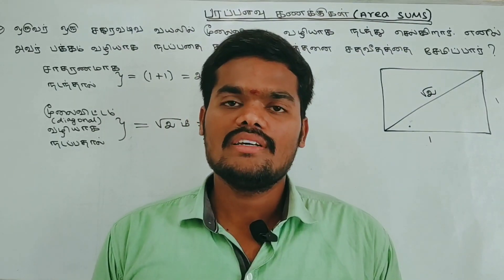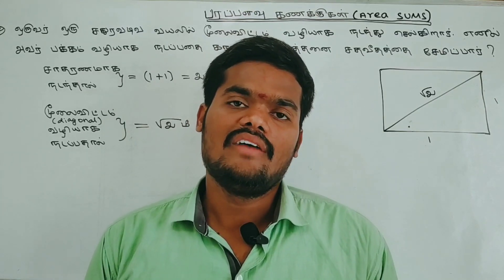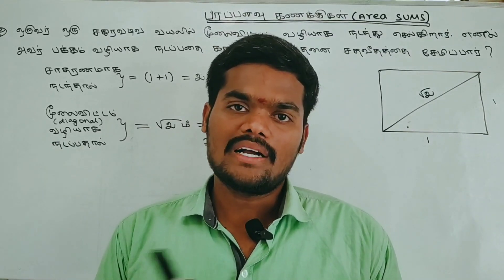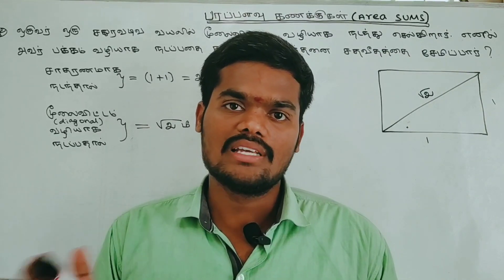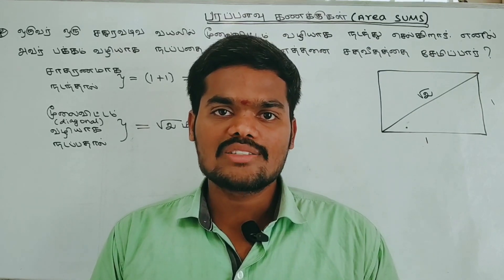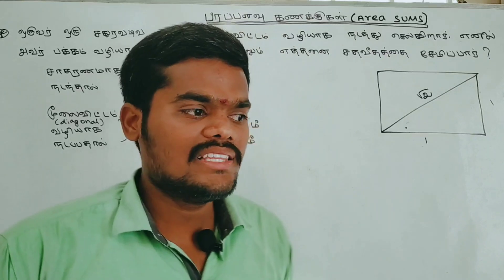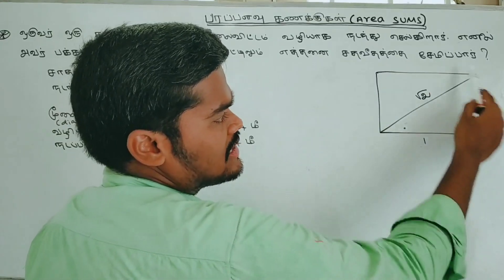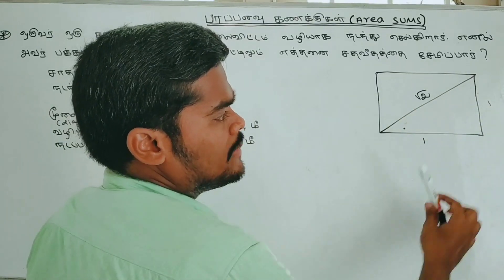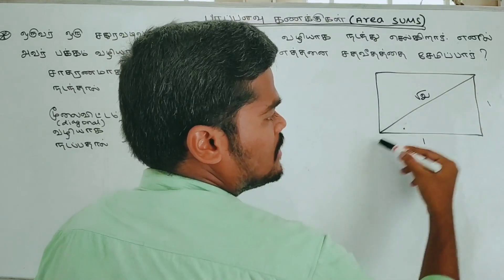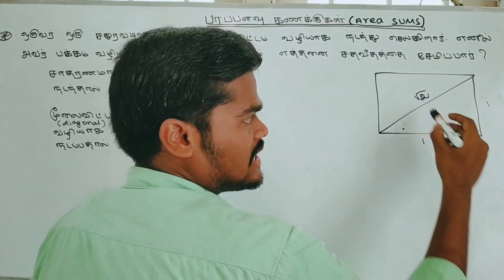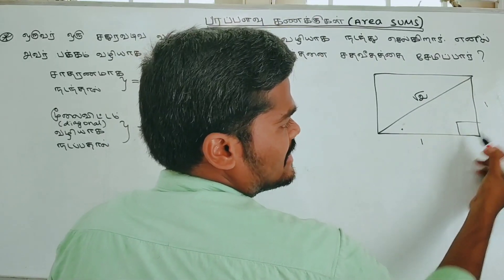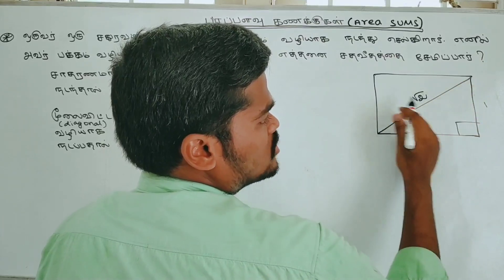Next problem: a square field. A person walks along the sides versus along the diagonal. Using the Pythagorean theorem, if the side is 2 meters, the diagonal is √(2² + 2²) = √8 = 2√2. The value of √2 is approximately 1.414, so the diagonal is about 2 × 1.414 ≈ 2.828 m, which we approximate as 2.8 m.